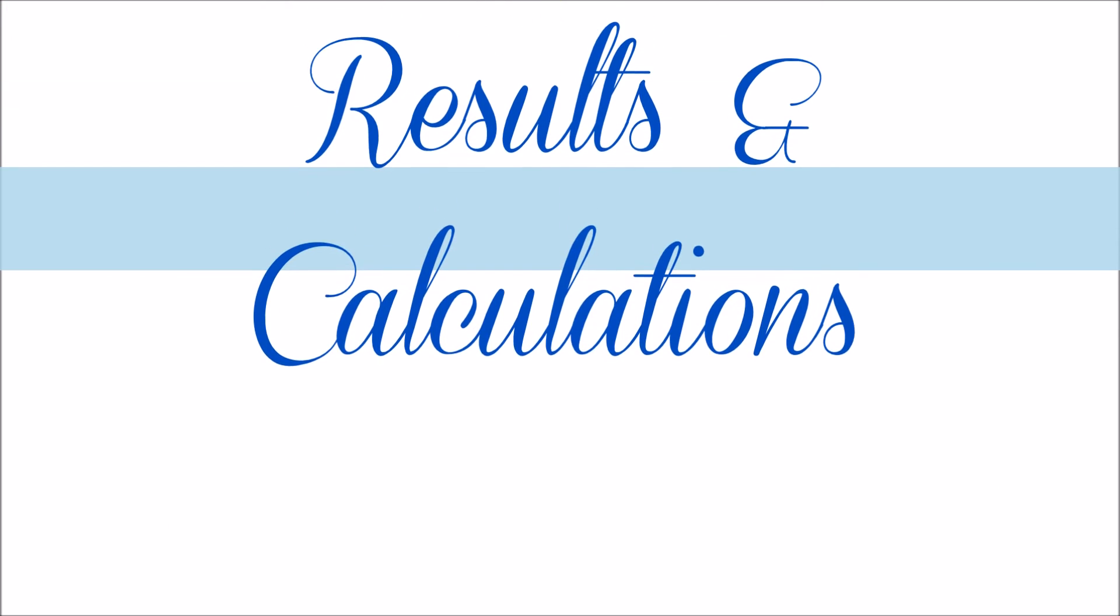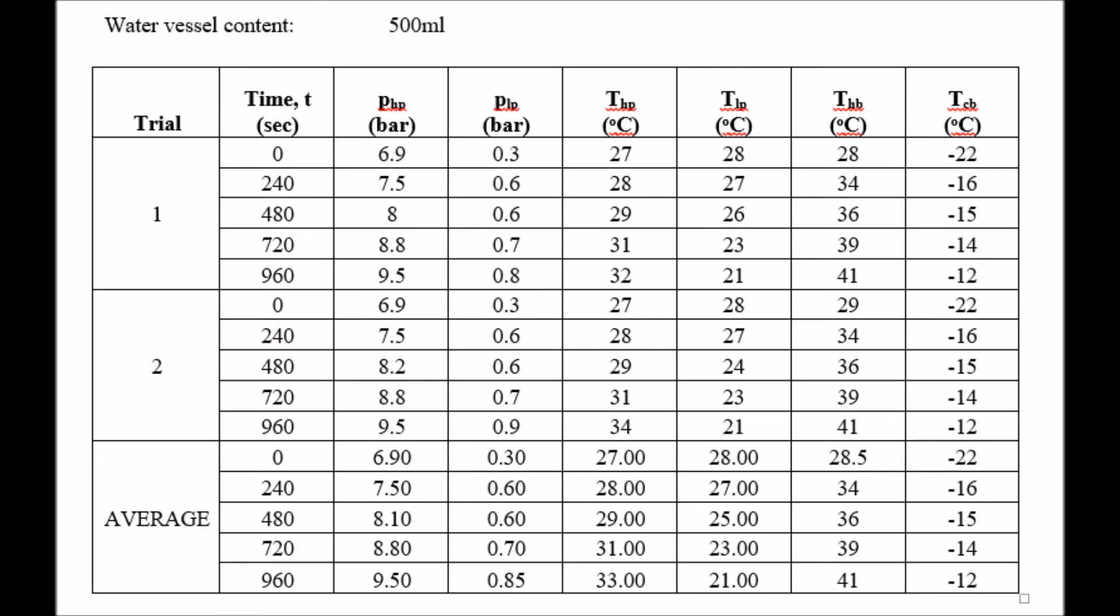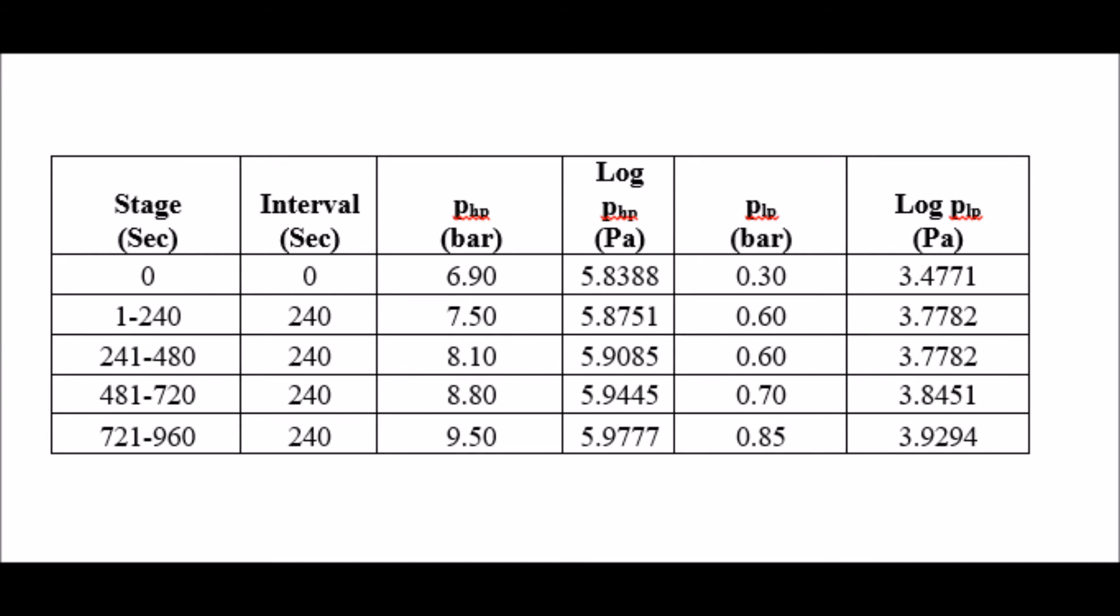Moving on to the results and calculations. In this table, all the values for the pressures and temperatures are tabulated after being recorded down from the experiment. Now, for the calculations. Using the PHP and PLP values, which is pressure upstream of the condenser and pressure at the inlet to the condenser, we can obtain the values of log PHP and log PLP.